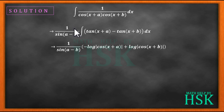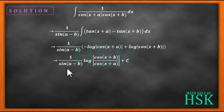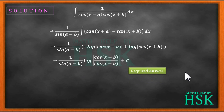Integration of tan(x+a) gives minus log of cos(x+a), and the second term gives plus log of cos(x+b). Combining these two log terms, we get the required answer: 1 upon sin(a-b) times log of [cos(x+b) upon cos(x+a)], plus C.